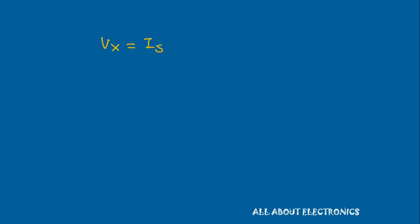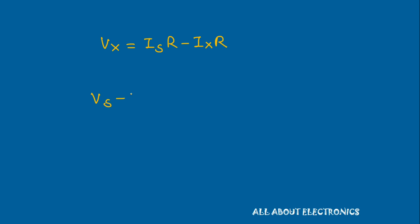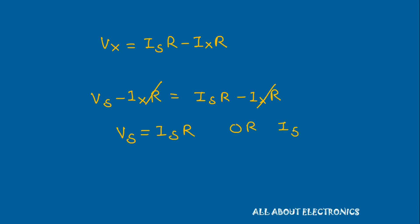We can write Vx = Is·R − Ix·R. Now comparing the two equations, Vs − Ix·R = Is·R − Ix·R. The Ix·R terms cancel out, giving us Vs = Is·R, or equivalently Is = Vs / R. In this way, we get the relationship between voltage and current.